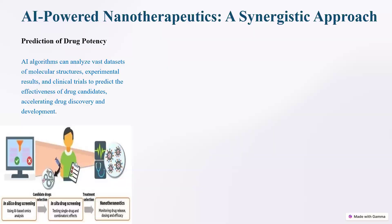One example is the prediction of drug potency: AI algorithms can analyze vast datasets of molecular structures, experimental results, and clinical trials to predict the effectiveness of drug candidates, accelerating drug discovery. Studies using in-silico drug screening and in-situ drug screening, finally reaching nanotheranostics for monitoring drug release, dosing, and efficacy, can also be aided by AI.